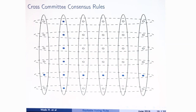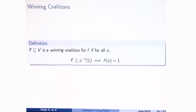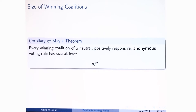In both of these cases, I focused on very particular sets — if they all agree on what the outcome should be, then that's going to be the outcome; otherwise we take majority rule. A set where if they all agree we follow them is called a winning coalition — standard terminology. A corollary of May's theorem is that if you have one of these reasonable rules, then every winning coalition has to be at least half of the people.